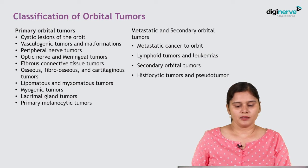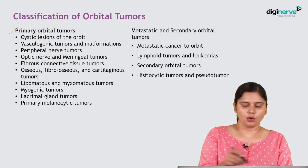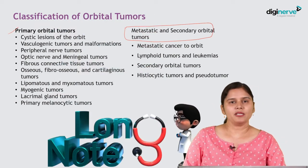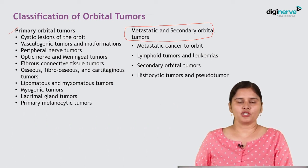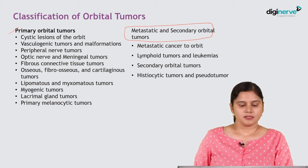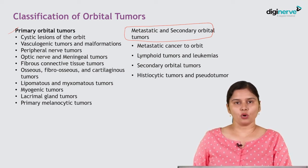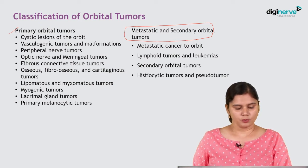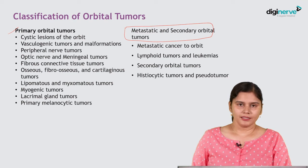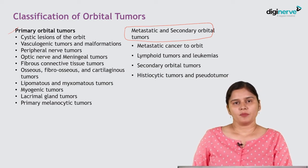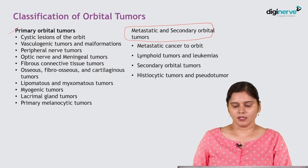Orbital tumors can be classified into primary orbital or metastatic secondary orbital tumors. Primary orbital tumors arise from the tissues of the orbit itself and include cystic lesions, vasculogenic lesions, peripheral nerve tumors, optic nerve or meningeal tumors, connective tissue tumors, cartilaginous tumors, myogenic tumors, lacrimal gland tumors, and melanocytic tumors. Metastatic cancers to the orbits are most commonly leukemias and lymphomas, breast carcinomas, or other tumor types.